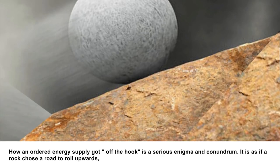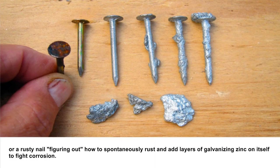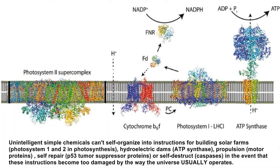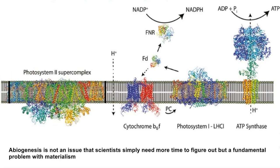How an ordered energy supply got off the ground is a serious enigma and conundrum — it is as if a rock chose a road to roll upwards, or a rusty nail figured out how to spontaneously rust and add layers of galvanizing zinc on itself to fight corrosion. Non-intelligent simple chemicals cannot self-organize into instructions for building solar farms like photosystem I and II in photosynthesis, hydroelectric dams like ATP synthase, propulsion like motor proteins, or self-repair like p53 tumor suppressor proteins, or self-destruct in the event that these instructions become too damaged. Abiogenesis is not an issue that scientists simply need more time to figure out, but a fundamental problem with materialism.